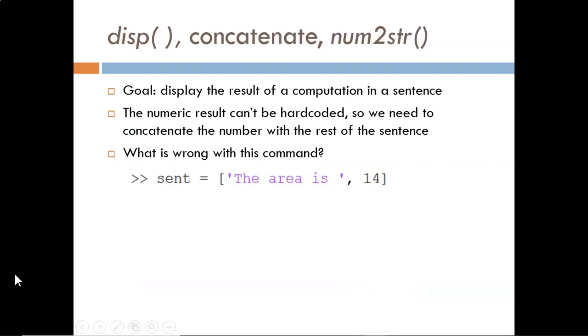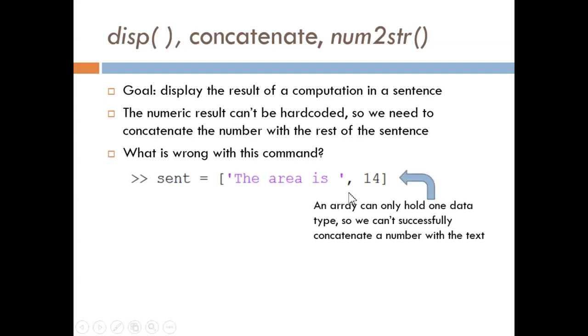A common need is to display a numeric result within a sentence. However, there is a speed bump to accomplishing this. What is wrong with the command shown here? It appears we are trying to concatenate a character array and a numeric value within a single array. We are not allowed to mix data types, so this won't produce the results we want.